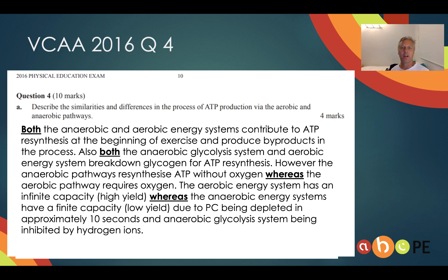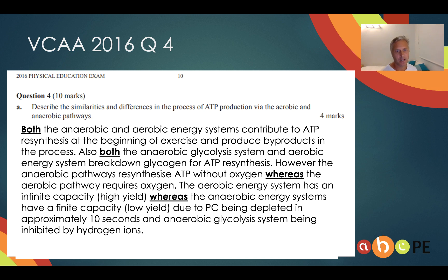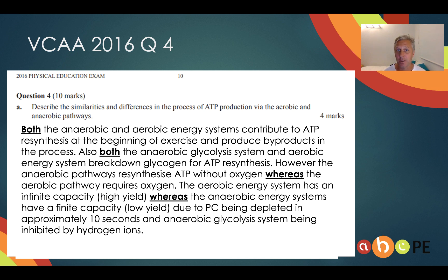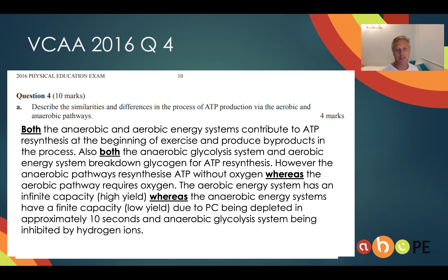Both the anaerobic and aerobic energy systems contribute to ATP resynthesis at the beginning of exercise and produce byproducts — there could be two marks there. Both systems also break down glycogen for ATP resynthesis. Then, using 'whereas' to show contrast: the anaerobic pathway synthesizes ATP without oxygen, whereas the aerobic pathway requires oxygen. The aerobic energy system has an infinite capacity or high yield, whereas the anaerobic energy systems have a finite capacity or low yield. That 'whereas' is really important because it signals comparison — people who didn't get marks here likely didn't use it.